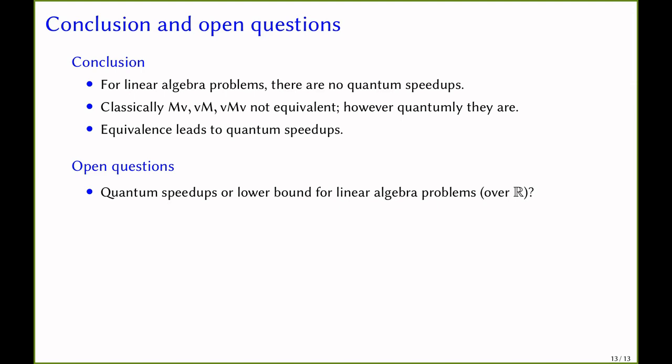For future directions: can we give quantum speedups or establish lower bounds for linear algebra problems over the real numbers? The lower bound methods above use the fact that linear maps are functions over finite sets, and they don't directly apply to the same problems over an infinite field such as the real numbers. A related interesting question is whether we can give a lower bound for the quadratic minimization problem, given access to a first-order oracle, which is closely related to the linear regression problem discussed in this talk.